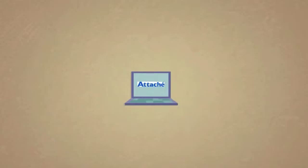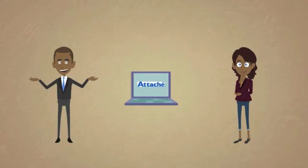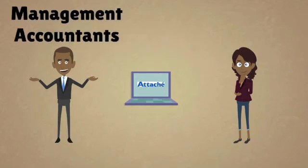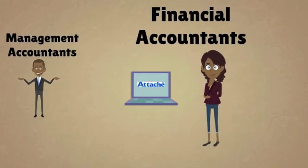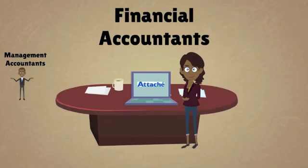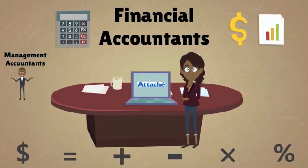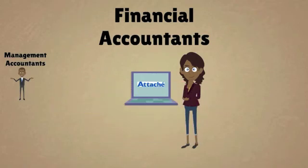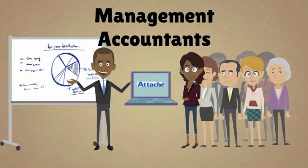Now that we have all our information in the general ledger, who's going to use it? Two types of accountants use the general ledger: management accountants and financial accountants. Financial accountants make sure that everything in the general ledger balances. They also make sure that all the general ledger data is available for managers, so they can see how the business is running on any given day. Management accountants, on the other hand, use the general ledger data to strategize for the company's future.